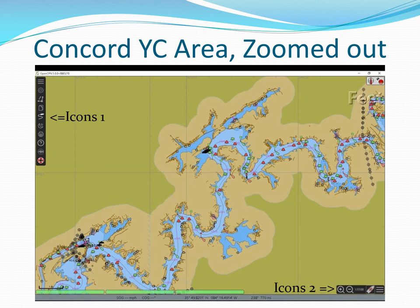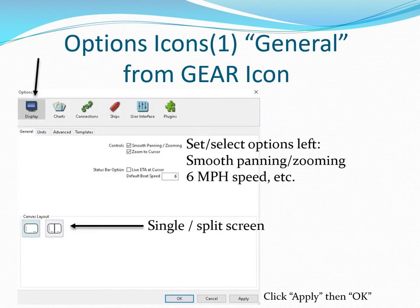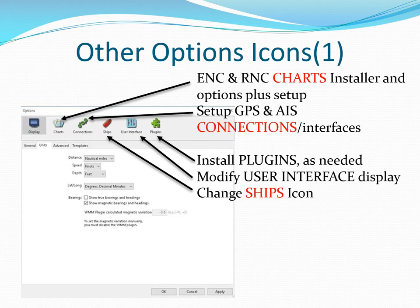There are two primary sets of icons in version 5 on the standard display. You can hide this set of icons by clicking on the hamburger at the top. The options display allows us to select various options for the main type display. The canvas layout allows you to use split screen mode. These options as shown should be used for inland river navigation. These other option icons are used to install charts, connect to GPS, AIS, and so forth.